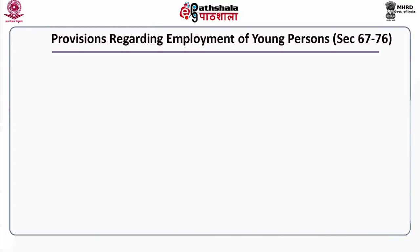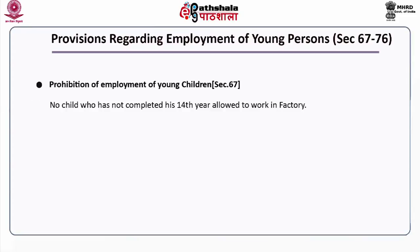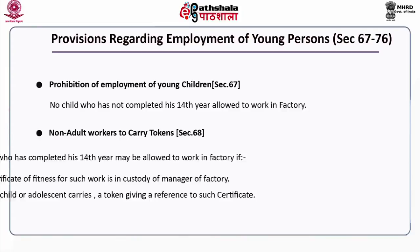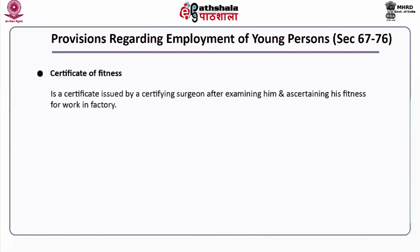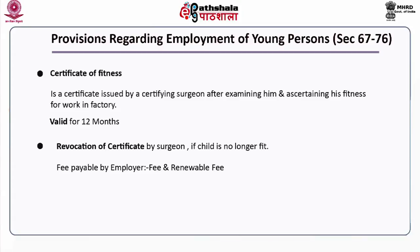Provisions regarding employment of young persons range from Sections 67 to 76. Section 67 deals with prohibition of employment of young children: no child who has not completed his 14th year of age is allowed to work in a factory. Under Section 68, non-adult workers must carry tokens. A child who has completed his 14th year may be allowed to work if a certificate of fitness is in the custody of the manager and the child carries a token referencing that certificate. The certificate of fitness is issued by a certifying surgeon after examining the child and is valid for 12 months. It may be revoked if the child is no longer fit, and the certificate fee is payable by the employer.